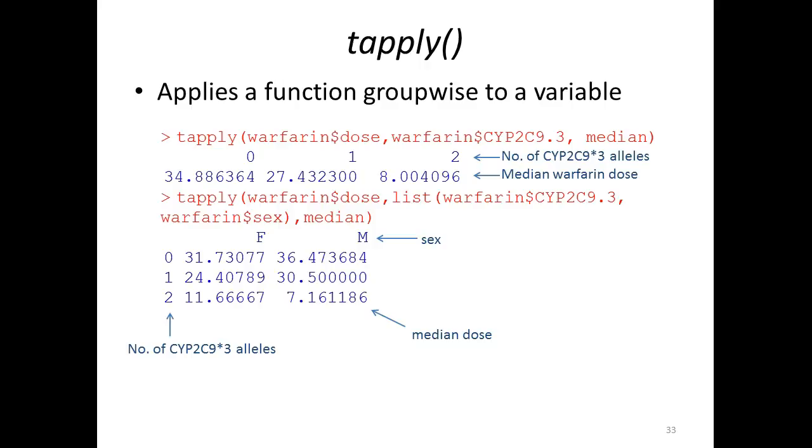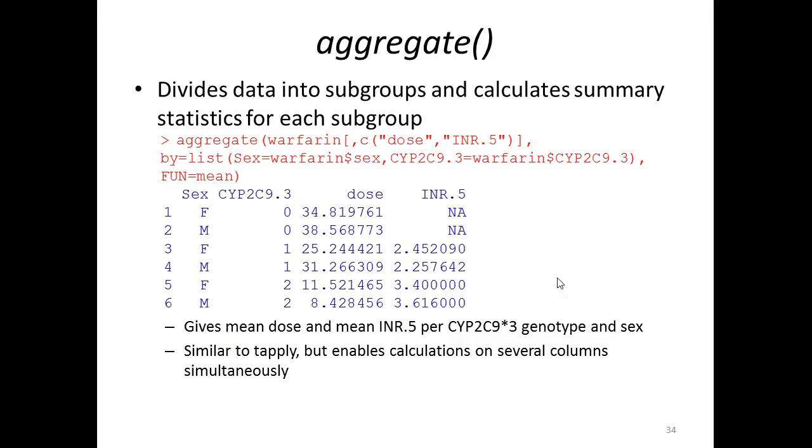Another way of doing this is to use the aggregate command. It does sort of the same thing as the tapply, but it returns the information in a different way, and more importantly, it allows you to aggregate information for several columns at once.